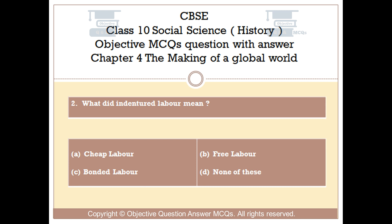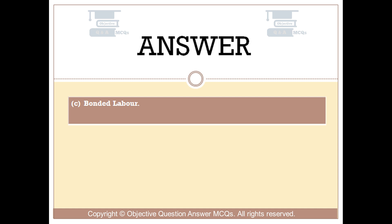Question number 2. What did indentured labor mean? Option A: Cheap labor. Option B: Free labor. Option C: Bonded labor. Option D: None of these. The right answer is Option C: Bonded labor.